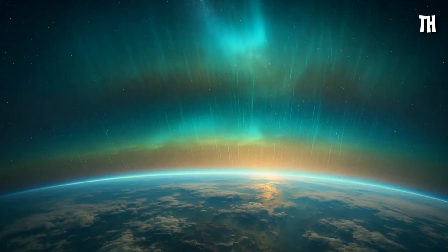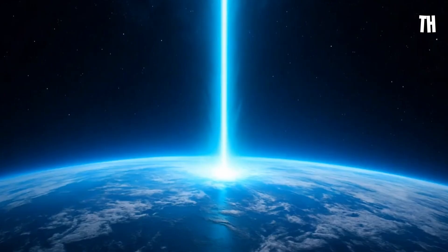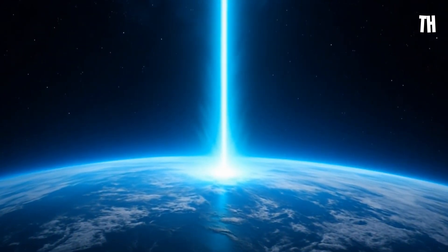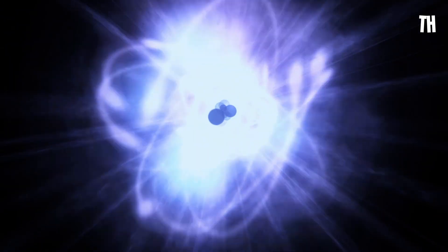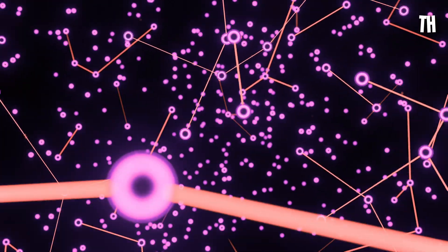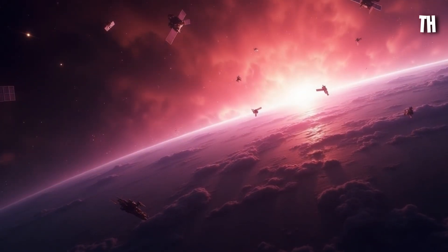In one second, Earth's upper atmosphere begins to ionize. High-energy gamma rays tear through the ionosphere, stripping electrons from atoms. A chain reaction of electrical disruption begins.